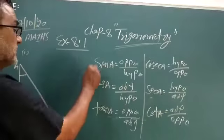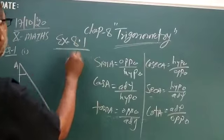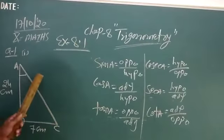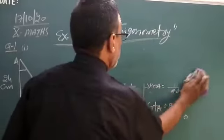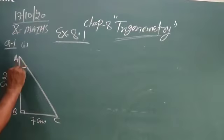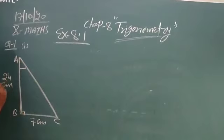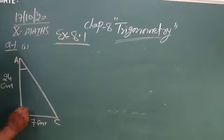By using this trigonometric ratio, today I start exercise number 8.1. In first question, by using this. Question number 1. In triangle ABC, in triangle ABC, the measurement of the length of AB is 24, BC is 7, B is right.